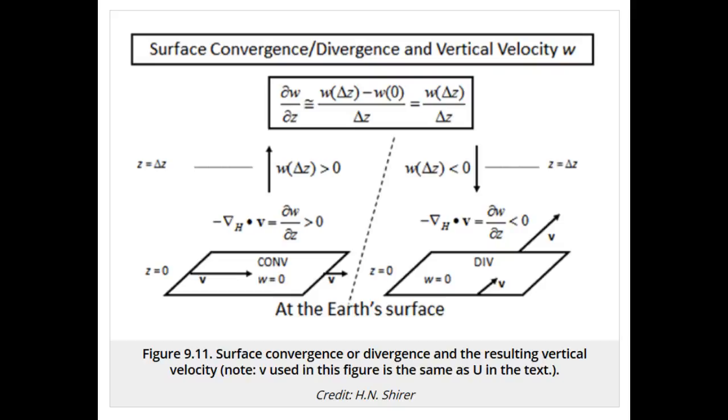A key to remember is that the vertical velocity w and its partial derivative with respect to height z do not always have the same sign. A second key point to remember is that the partial derivative of w with respect to z is the negative of the divergence.